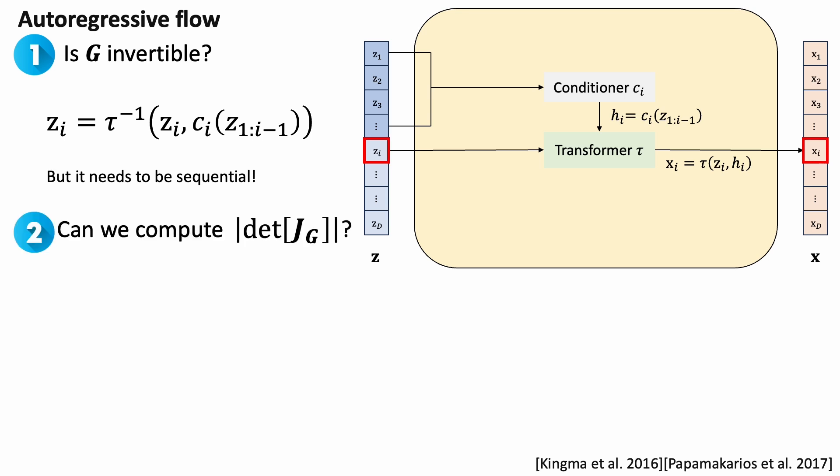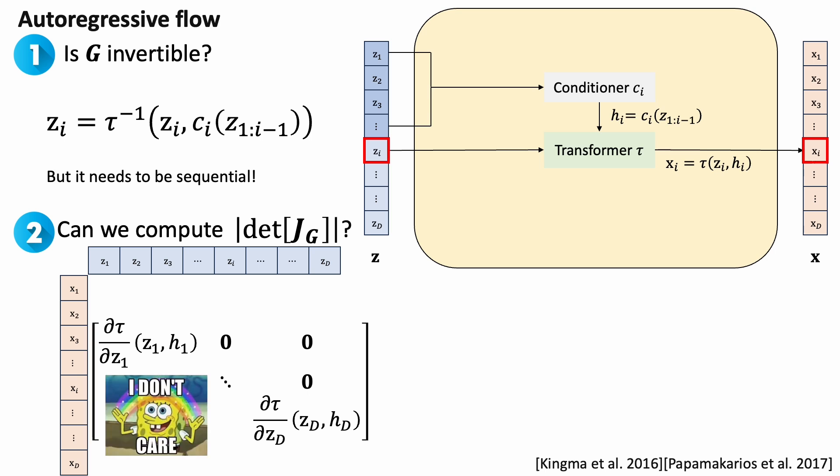The Jacobian matrix has a lower triangular structure because it's auto-regressive. This means we don't need full Jacobian to compute the determinant. We just need to compute the gradients on the diagonal and multiply them together.